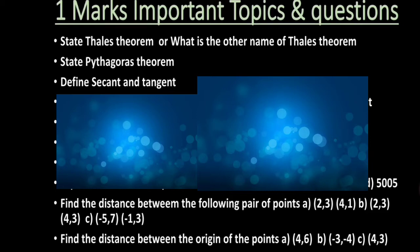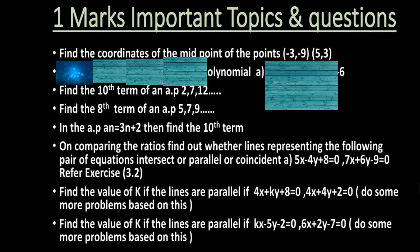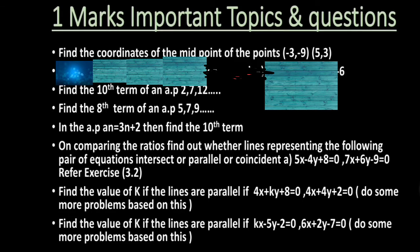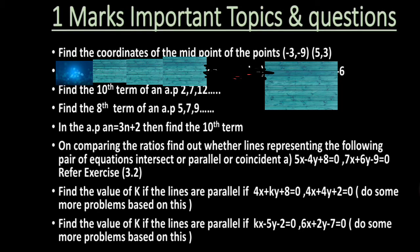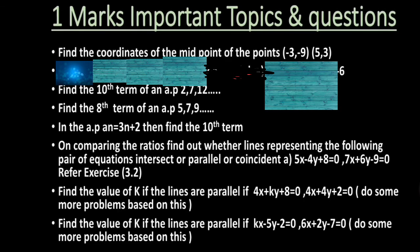Next, find the coordinates of the midpoint of the points (-3, -9) and (5, 3). This is also most expected question in the exam. Next, find the 10th term of an AP: 2, 7, 12. You need to find the 10th term by using the nth term of AP formula. I have given the question. Next one is find the 8th term of an AP: 5, 7, 9. Next, in the AP, if an = 3n + 2, then find the 10th term. This is also most expected question.